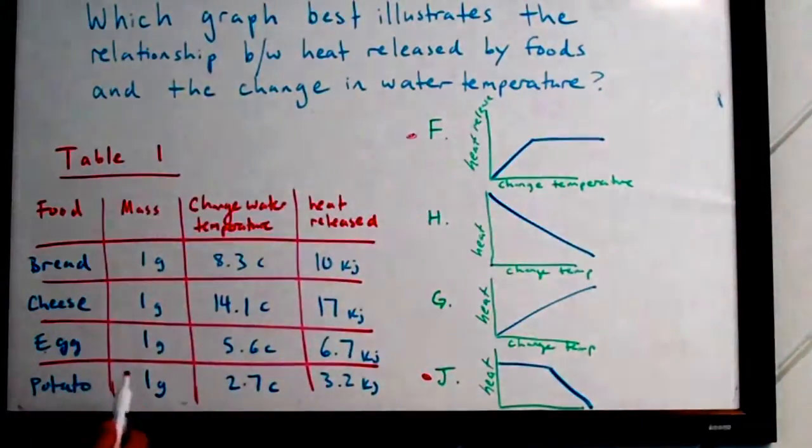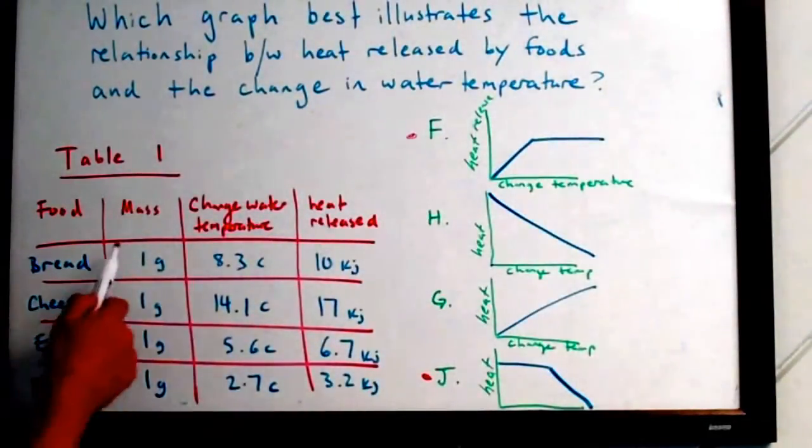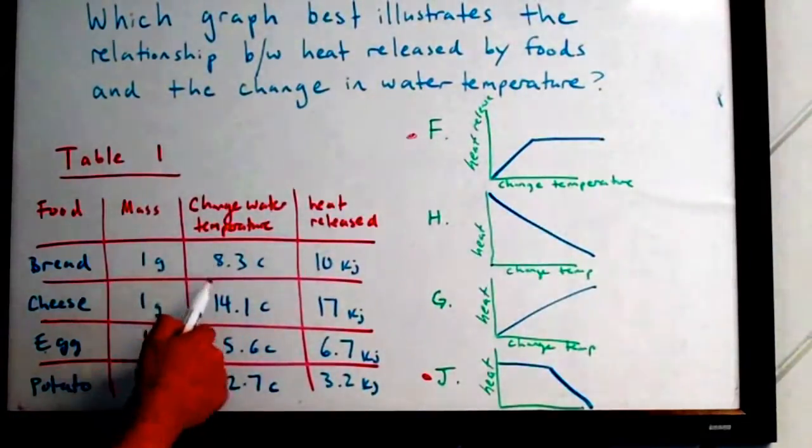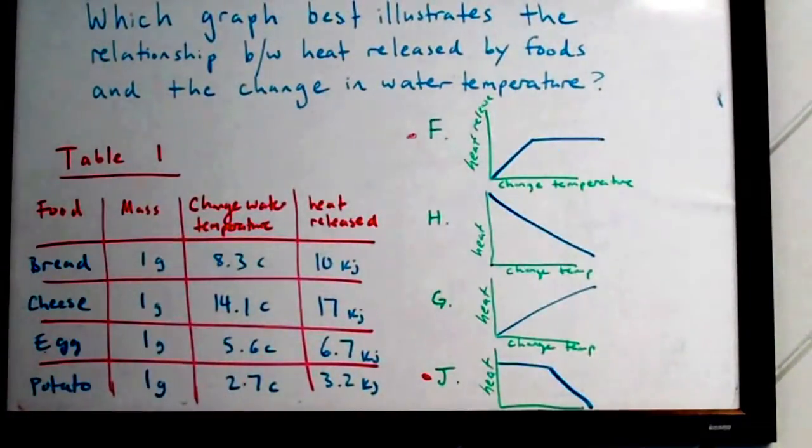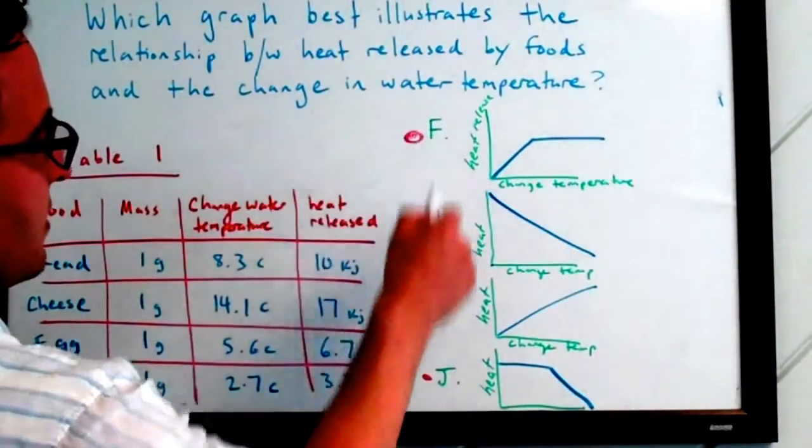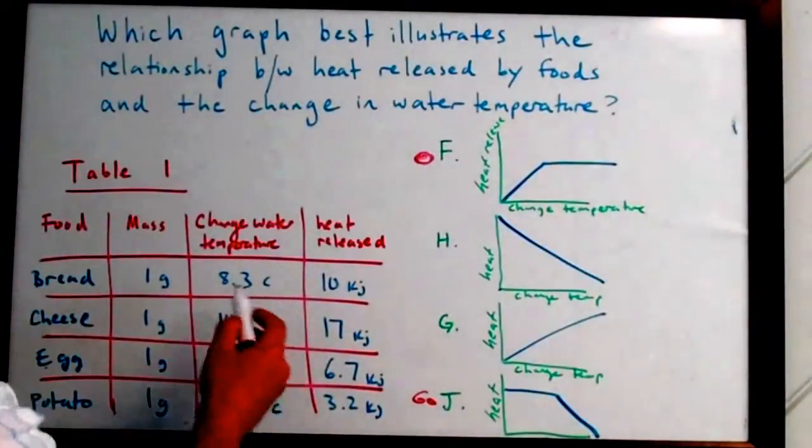Now what a lot of students will do is they'll see the 4 different types of foods in the table—bread, cheese, egg, and potato, all at the same mass. And then they'll see that the change of water temperature goes up and then it goes down. So they automatically assume that the graph is going to fluctuate. So they're going to deduce that it's either F or J. But this is not a fluctuating graph.